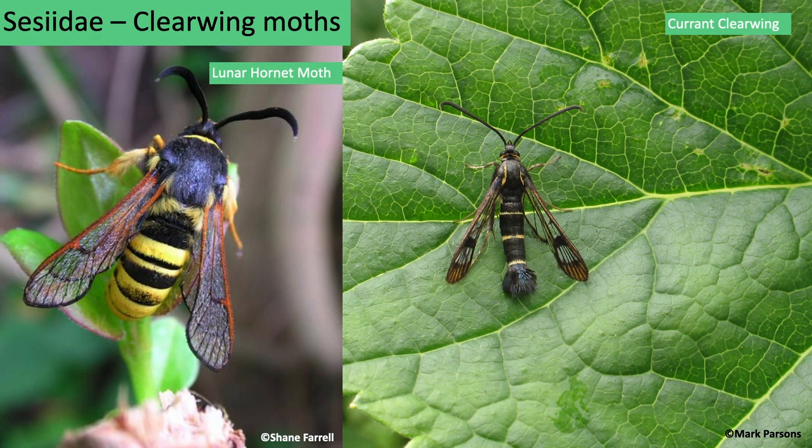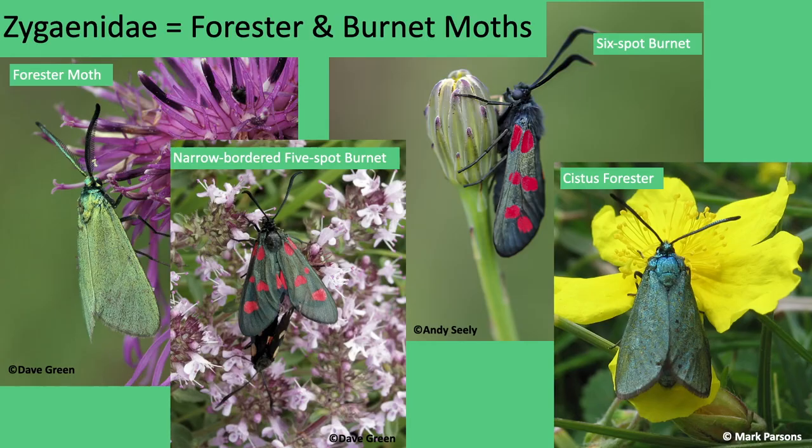One of my favourite families, these are the clearwing moths. There are 14 species in the UK, two in Yorkshire, and they mimic wasps to protect themselves from predators. They have transparent wings and black bodies with yellow or red bands on them, and they fly during the day.